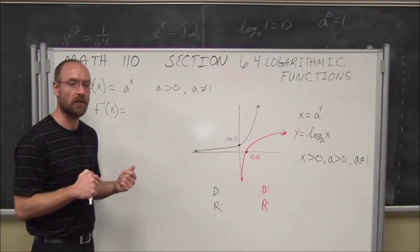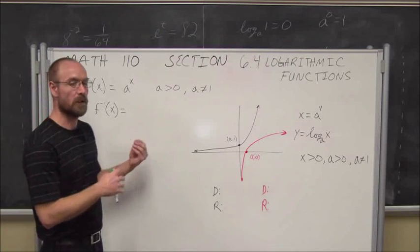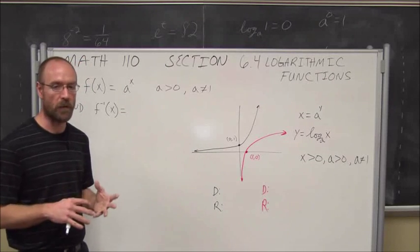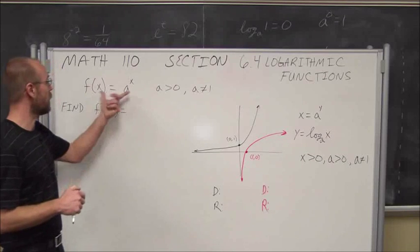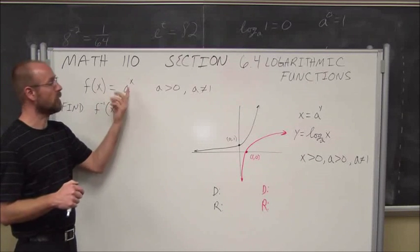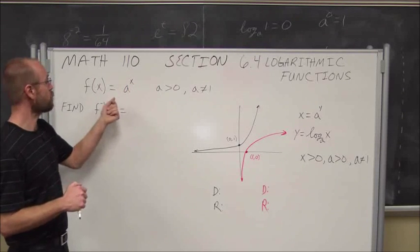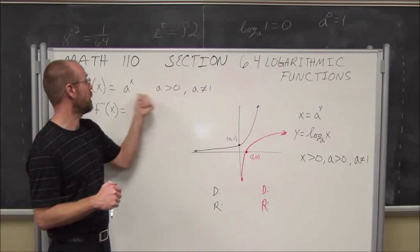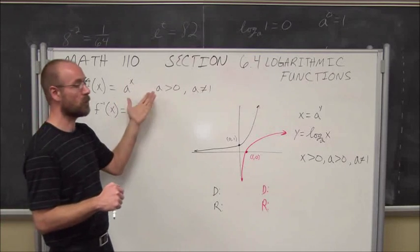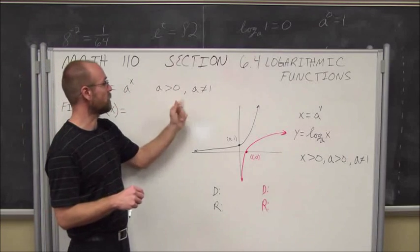In the previous section 6.3, we talked about exponential functions. Here we're going to introduce logarithmic functions. Logarithms are the inverse operation of exponents. So let's recall an exponential function: f of x equals a to the x. It's called an exponential function because our variable lies within the exponent. Our base has to be greater than 0. We can't have a negative value of base, otherwise that's not going to be a one-to-one function.